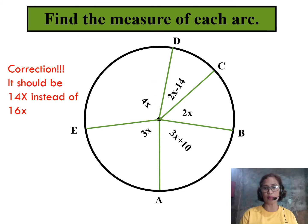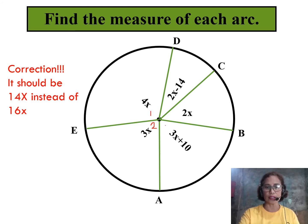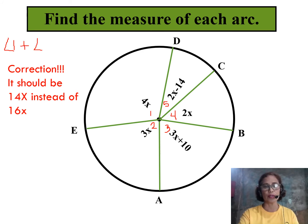Let us now apply the sum of the central angle theorem by solving for the measure of the following arcs: arc ED, arc DC, arc CB, arc BA, and arc AE. Since the central angle measures are given by algebraic expressions, let me write 4X as angle 1, 3X as angle 2, angle 3, angle 4, and angle 5. Following the theorem, we can write that angle 1 plus angle 2 plus angle 3 plus angle 4 plus angle 5 equals 360 degrees.